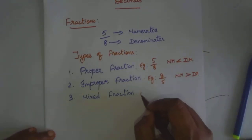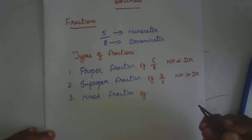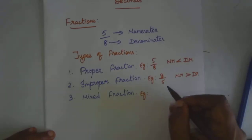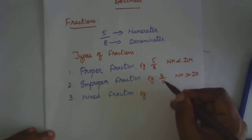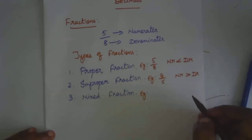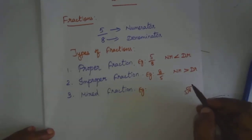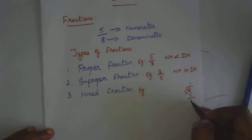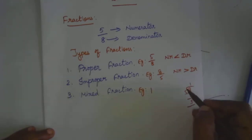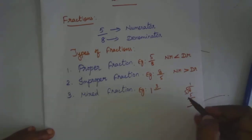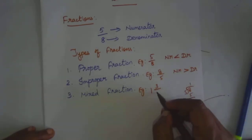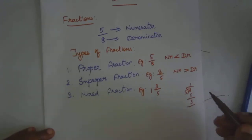Next one is mixed fraction. What is a mixed fraction? We will write this improper fraction into mixed form. How can we write it? 8 divided by 5. You all know division. 8 divided by 5: 1 times 5 is 5. Remainder is 3. So 1 is the whole number. The remainder value 3 is the numerator part. 5 is the denominator. This is called a mixed fraction.